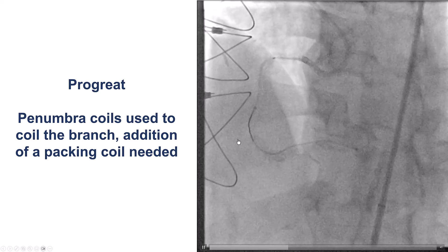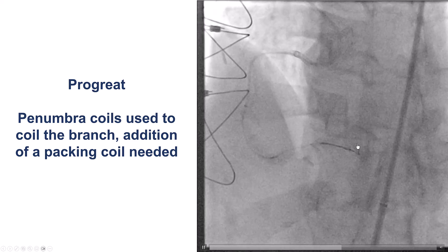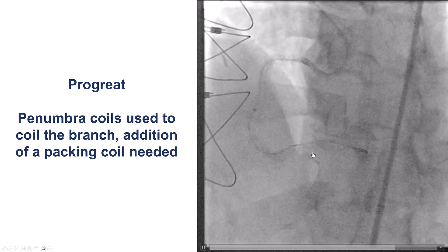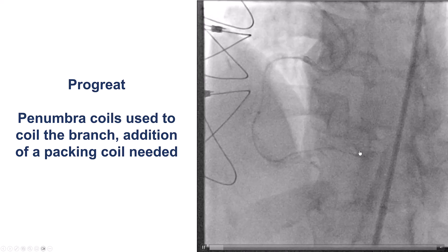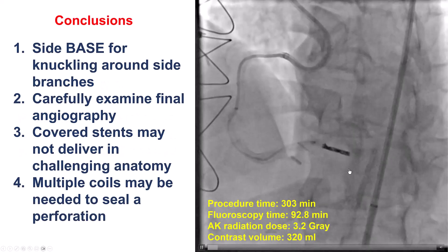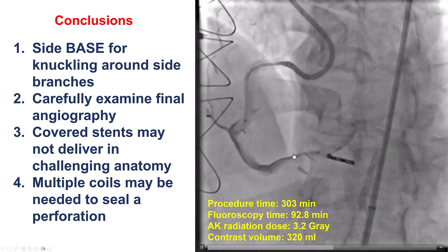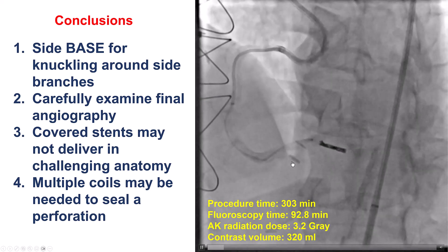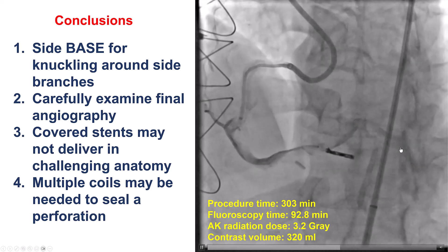We advanced a Progreat — a 2.8 French microcatheter — inside that little branch. We then used a coil, a Penumbra Ruby coil, into the posterolateral branch and overlapped it with a packing coil. That stopped flow into this branch while we still had flow going into the right posterolateral.